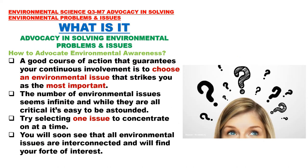A good course of action that guarantees your continuous involvement in an environmental awareness advocacy is to choose an environmental issue that strikes you as the most important. The number of environmental issues seems infinite, and while they are all critical, it's easy to be overwhelmed. Try selecting one issue to concentrate on at a time and you will soon see that all environmental issues are interconnected. Choosing one environmental issue will allow you to decide which area you want to work on first, and with purpose, we can better focus on what we want to accomplish.